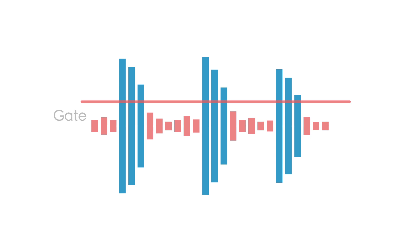An expander is very similar to a gate, the only difference being that a gate cuts out unwanted signal entirely. An expander on the other hand just compresses these signals so they are not as prominent.